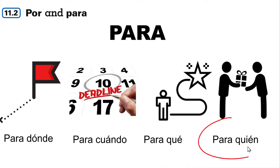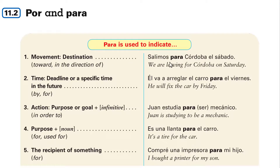Then, para quién? So if you're giving something to somebody, then use para. Examples — destination: salimos para Córdoba. Time or deadline: él va a arreglar el carro para el viernes. Propósito u objetivo: Juan estudia para ser mecánico. O también propósito: es una llanta para el carro. If there's a recipient: compré una impresora para mi hijo.